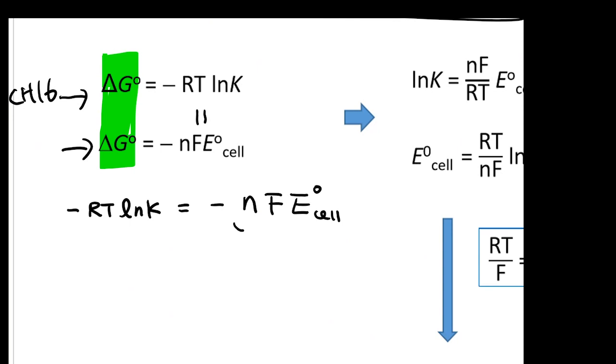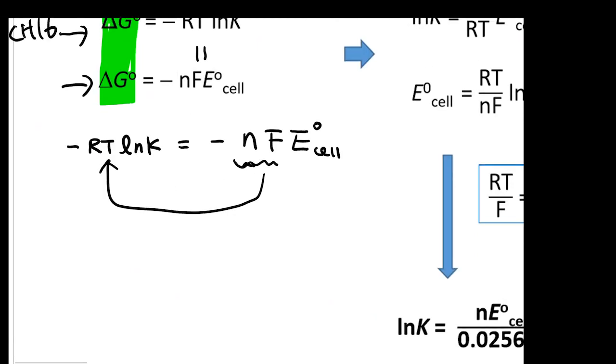Then you can actually move these things to the left. You divide the negative NF on both sides. So once you do that, then you're going to get E° cell is going to be equal to RT at the bottom of NF times your natural log K.